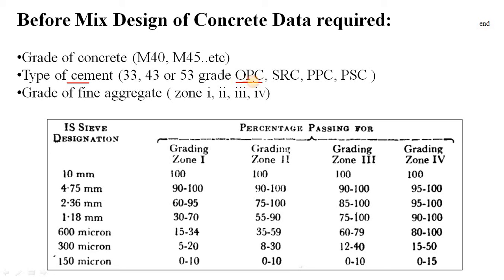If you are using ordinary Portland cement (OPC), which grade are you using? 53 grade gives you more strength and 33 grade gives you less strength if you use the same amount of cement. So for higher grade you use less cement, and for lower grade OPC you have to use more cement.